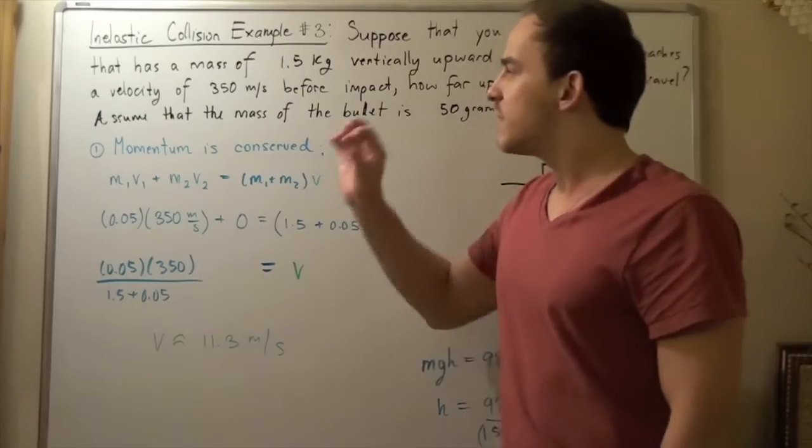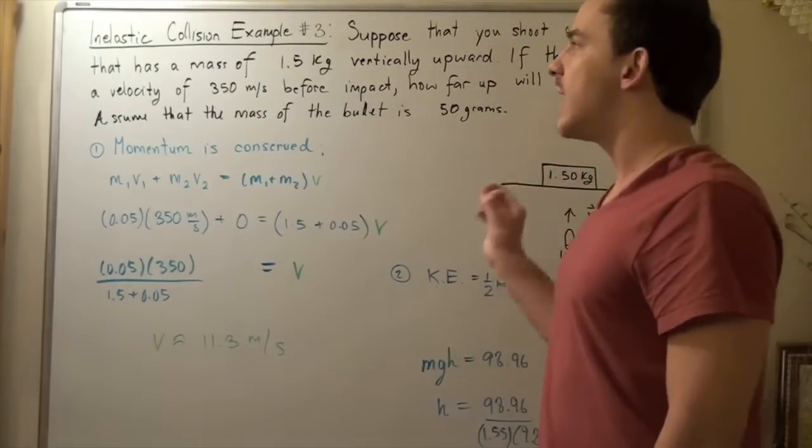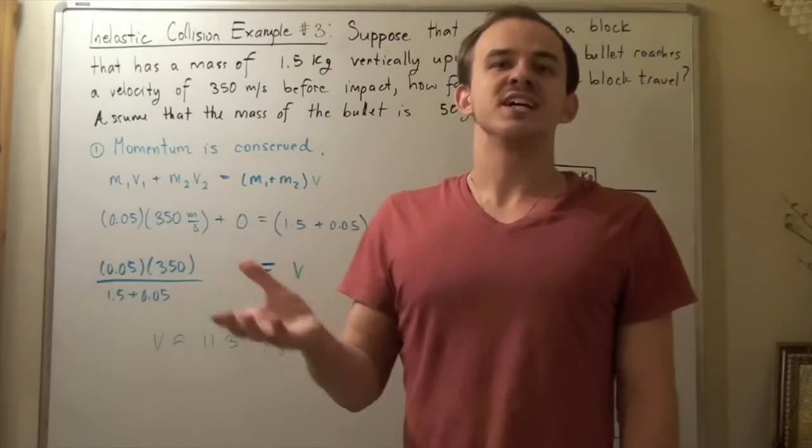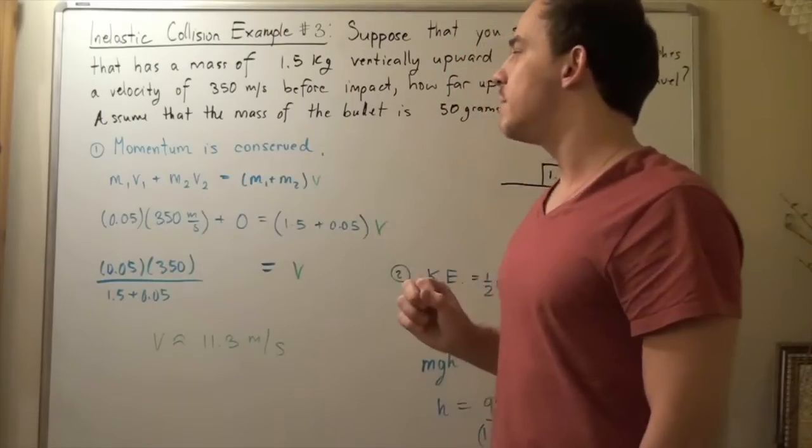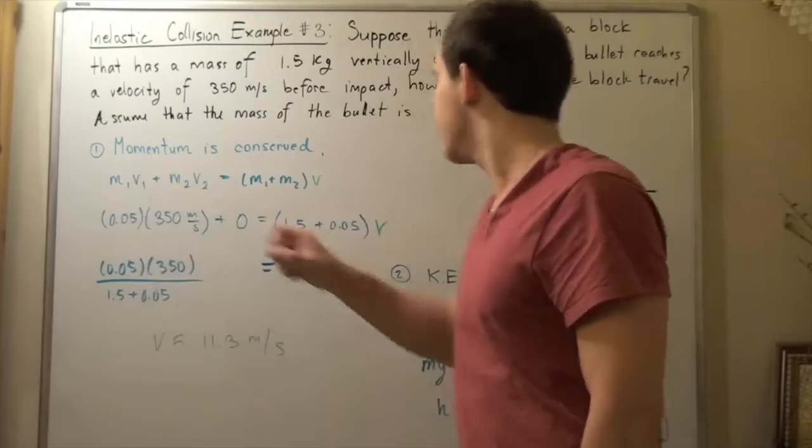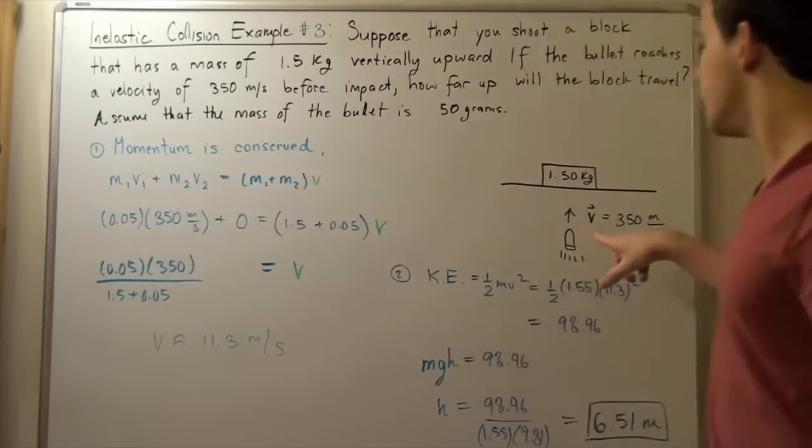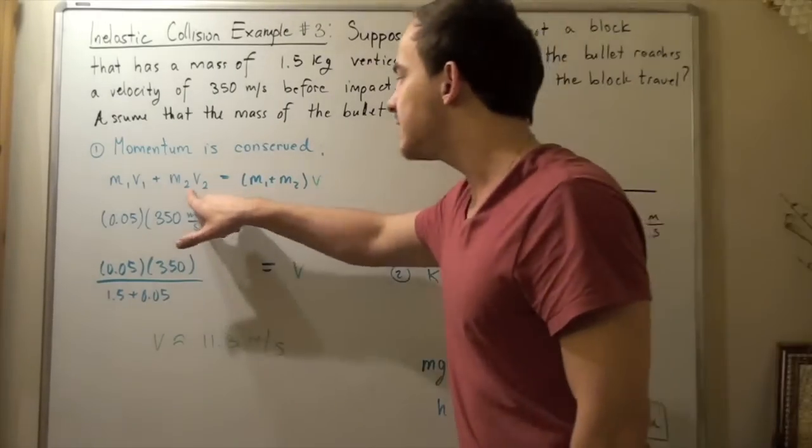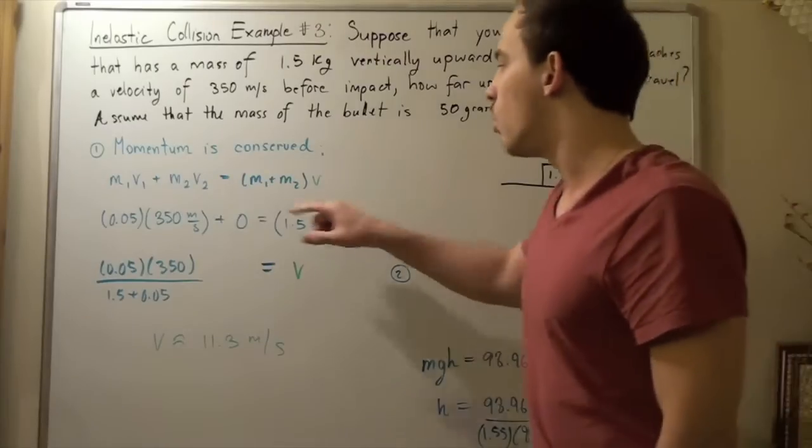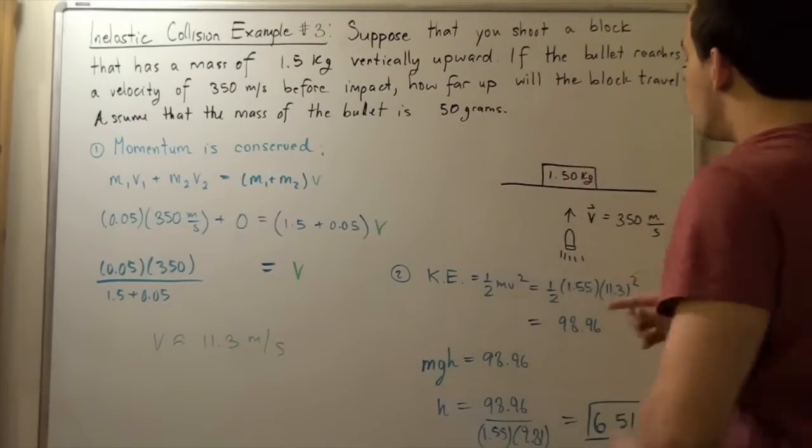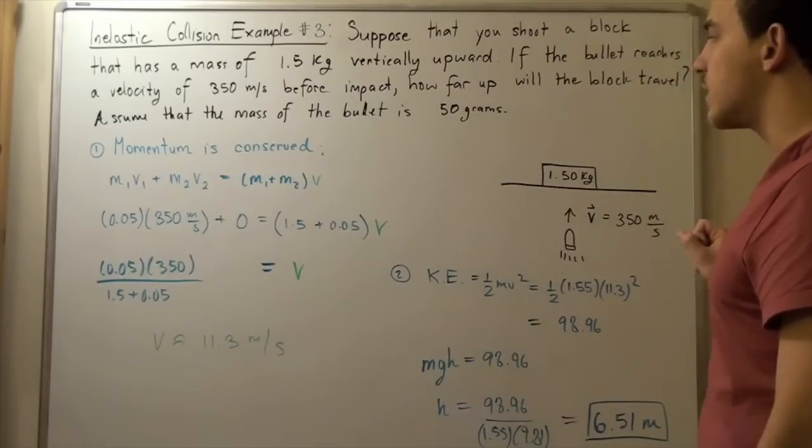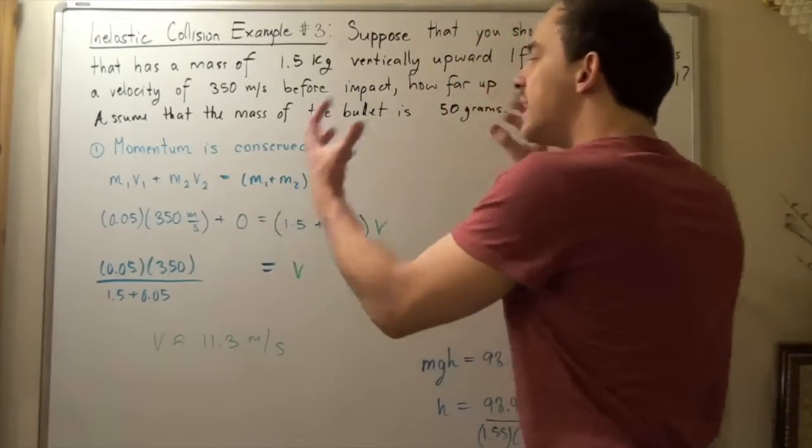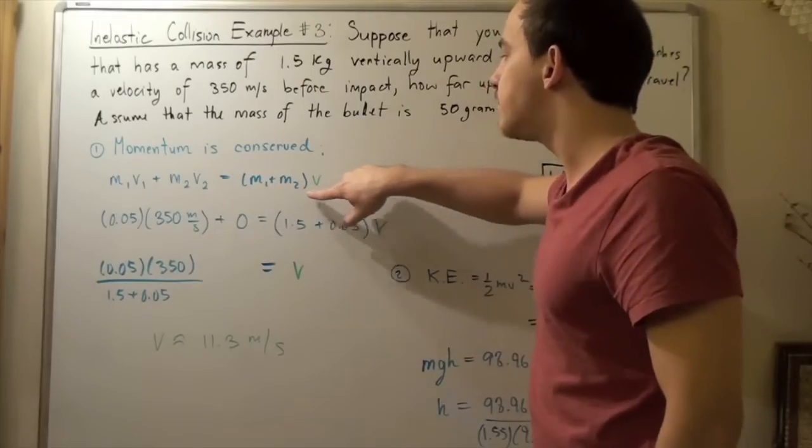We're going to use the fact that momentum is conserved every time we talk about inelastic collisions. Remember, mechanical energy such as kinetic energy is not conserved, but momentum is conserved. So m1v1 + m2v2 equals the final system, which is the bullet embedded in the block: (m1 + m2)v. They combine and multiply by the velocity.